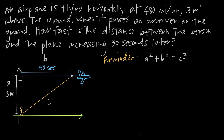When we have related rates problems, we can always plug in for values that aren't changing. This 3 mile distance is never going to change, so we can go ahead and plug 3 in for A. We get 3 squared or 9, so we can say 9 plus B squared is equal to C squared. But the length of side B and the length of side C are going to continue to change as the plane continues to fly, so we're not going to plug in for those variables yet.